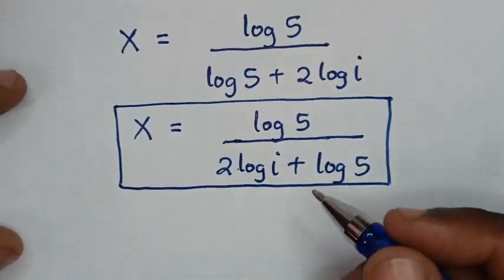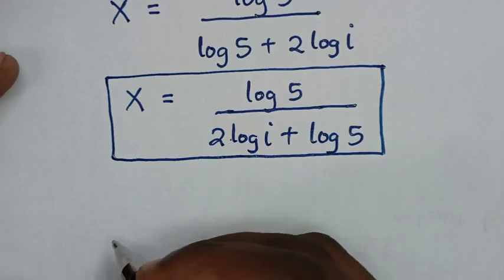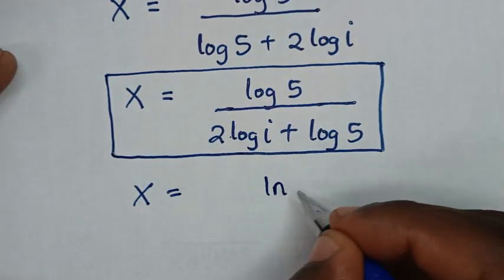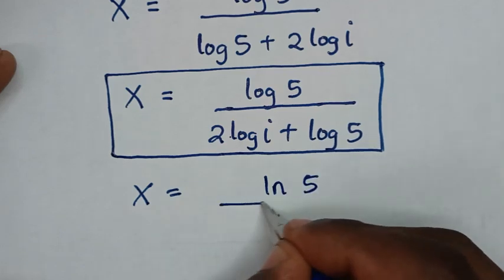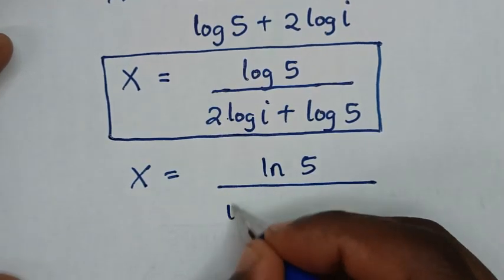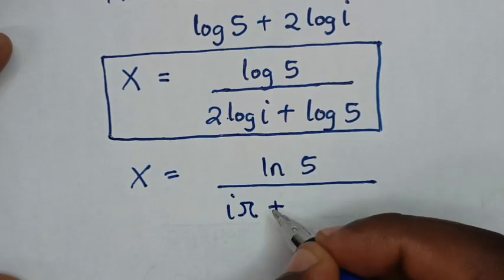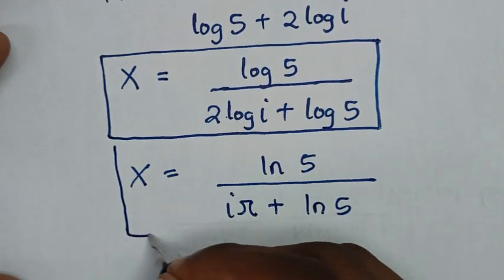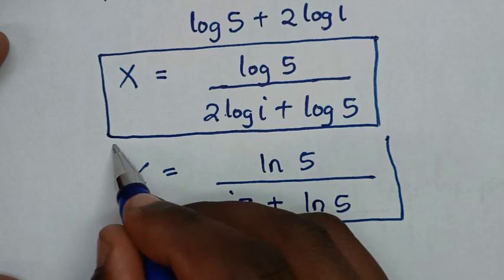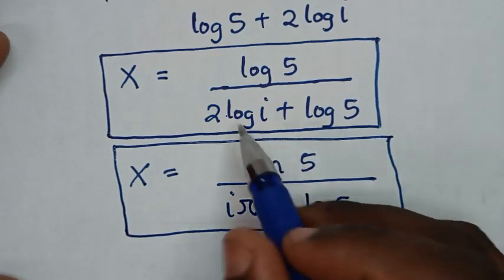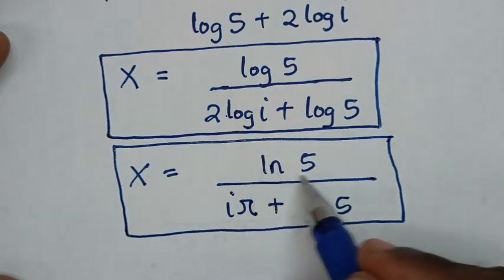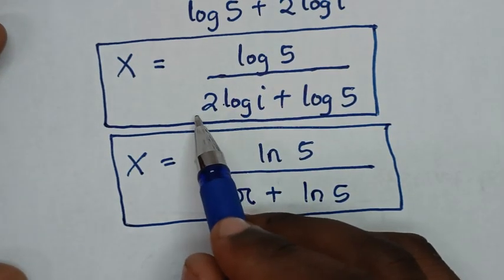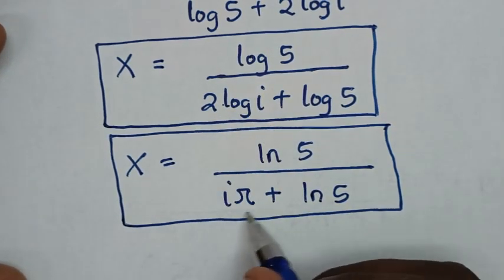Now let's compare the two final answers. In natural logarithms: x equals ln 5 over iπ plus ln 5. In common logarithms: x equals log 5 over 2 log i plus log 5. Comparing the two: ln 5 corresponds to log 5, and iπ corresponds to 2 log i.